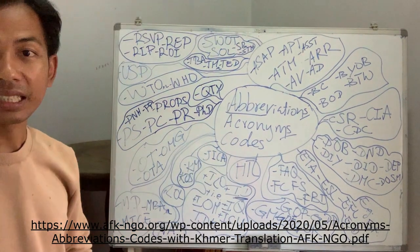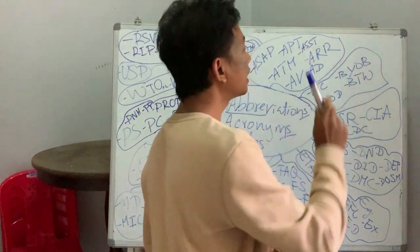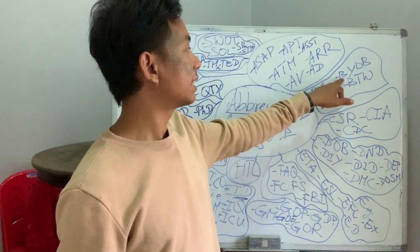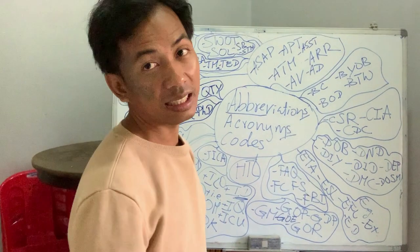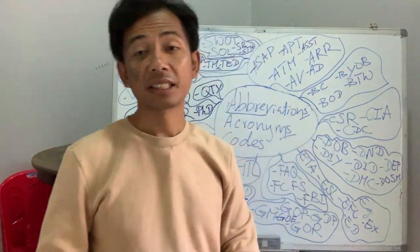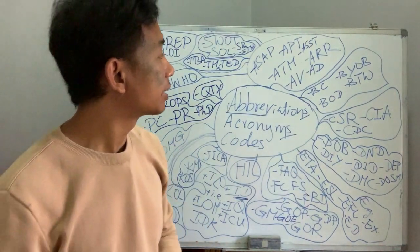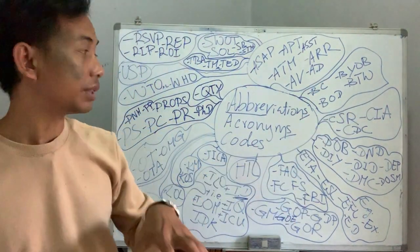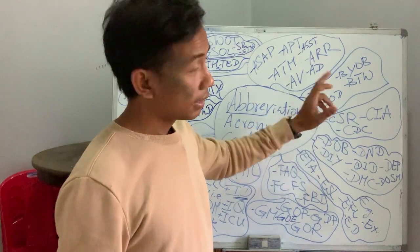BYOB — bring your own beer. If you go to a party and they put a note BYOB, that means you have to buy a beer and bring it there, otherwise you have nothing to drink. BOD — board of directors. If you have a company with a few people investing or starting together, those people we call BOD. So board of directors are all the owners.